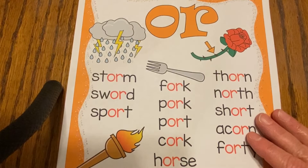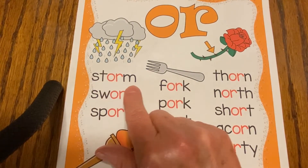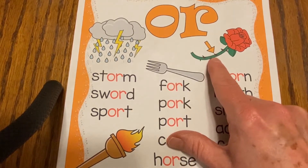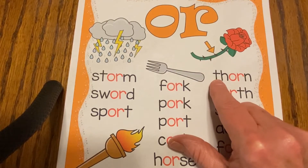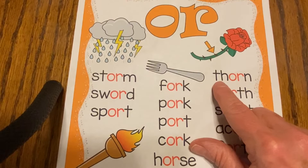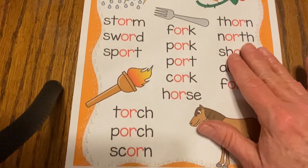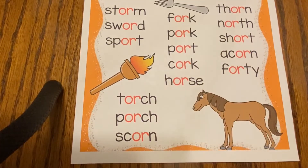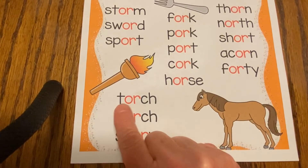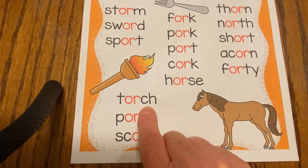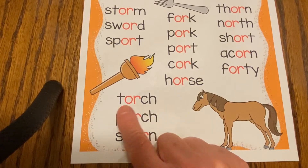I'm going to show you some examples of words with the bossy R. Let's take a look at the O-R. We have S-T-O-R-M, storm. A F-O-R-K, fork. Now what is that — F-O-R-N? So we have two digraphs: five letters but only three sounds. What is this? The Statue of Liberty holds it — T-O-R-C-H. Another digraph: the O-R digraph and the C-H digraph. Torch.